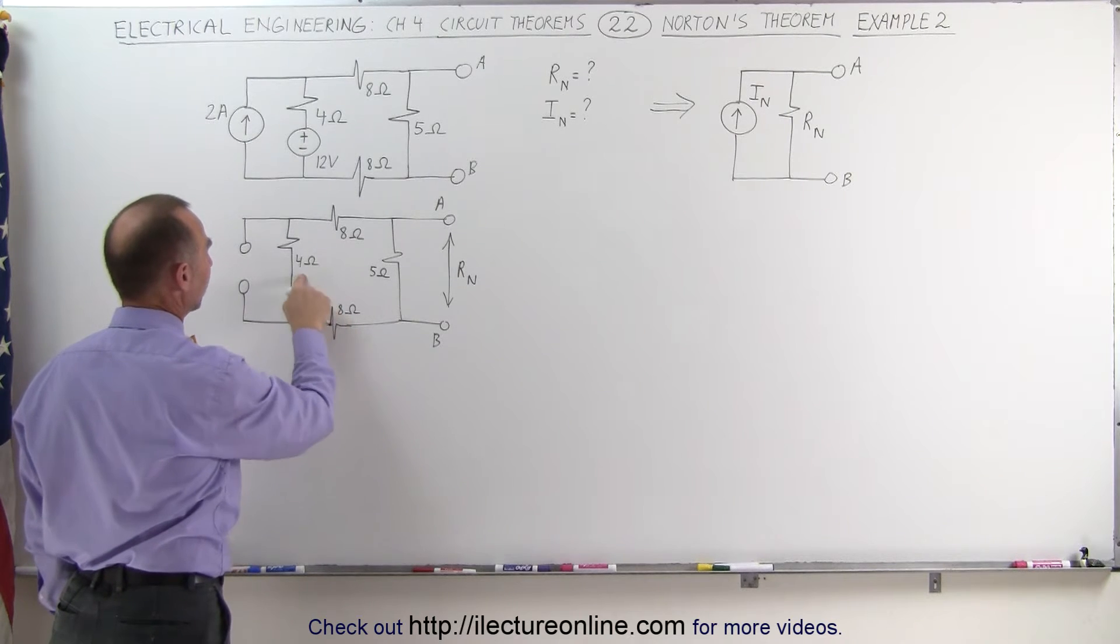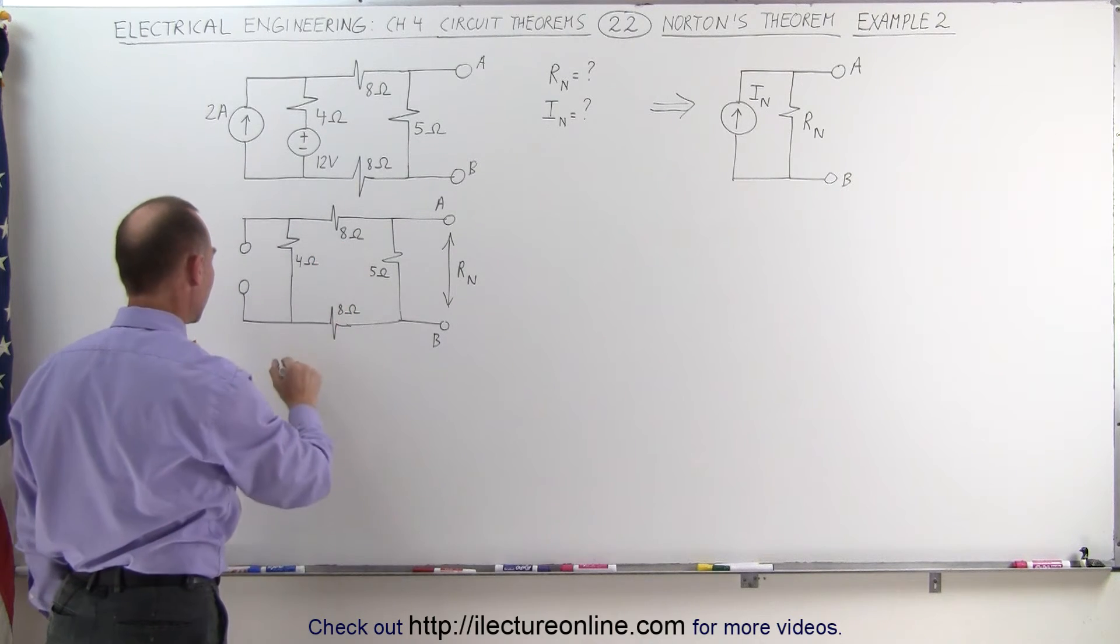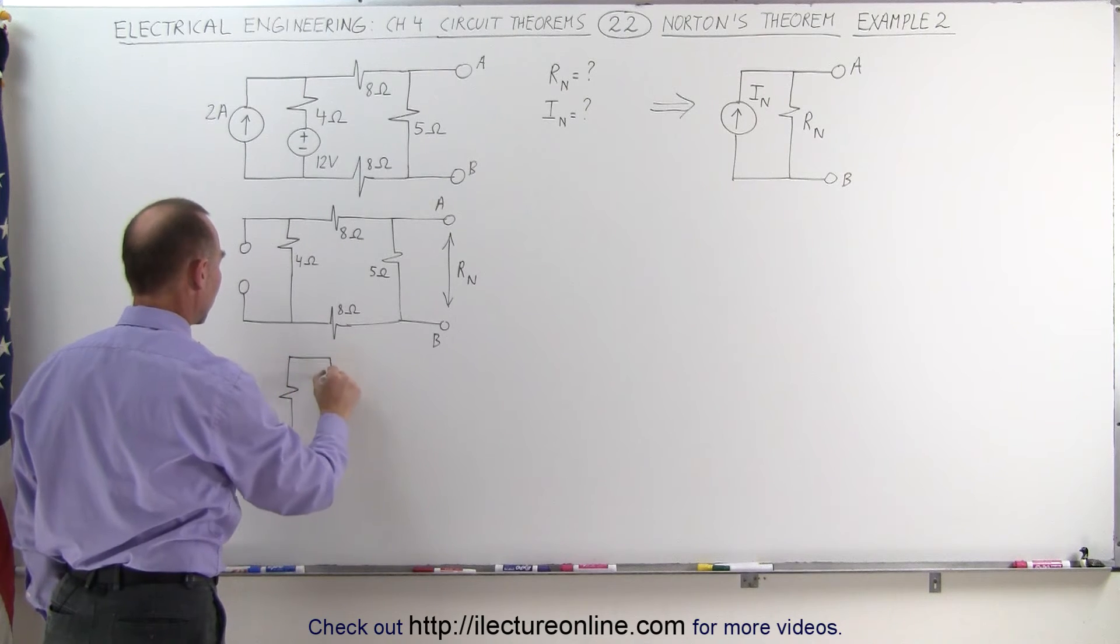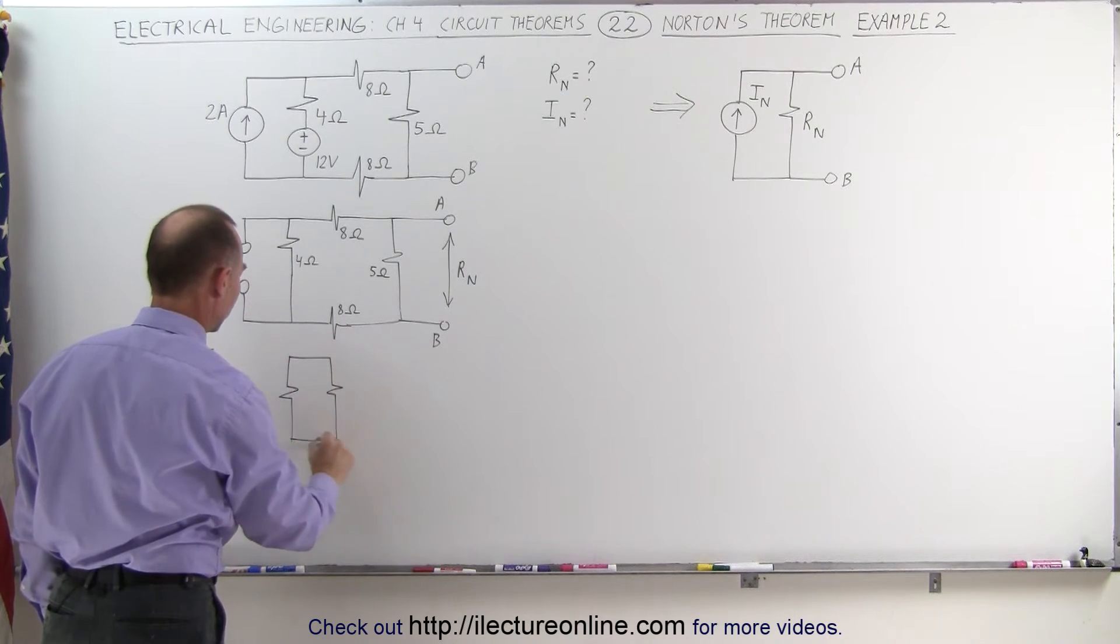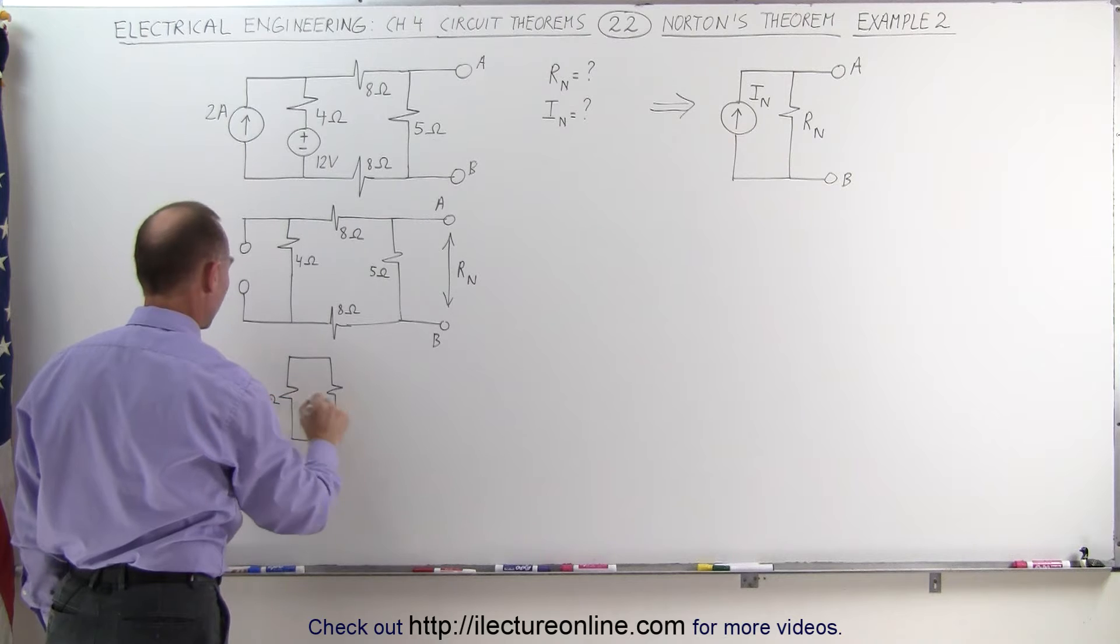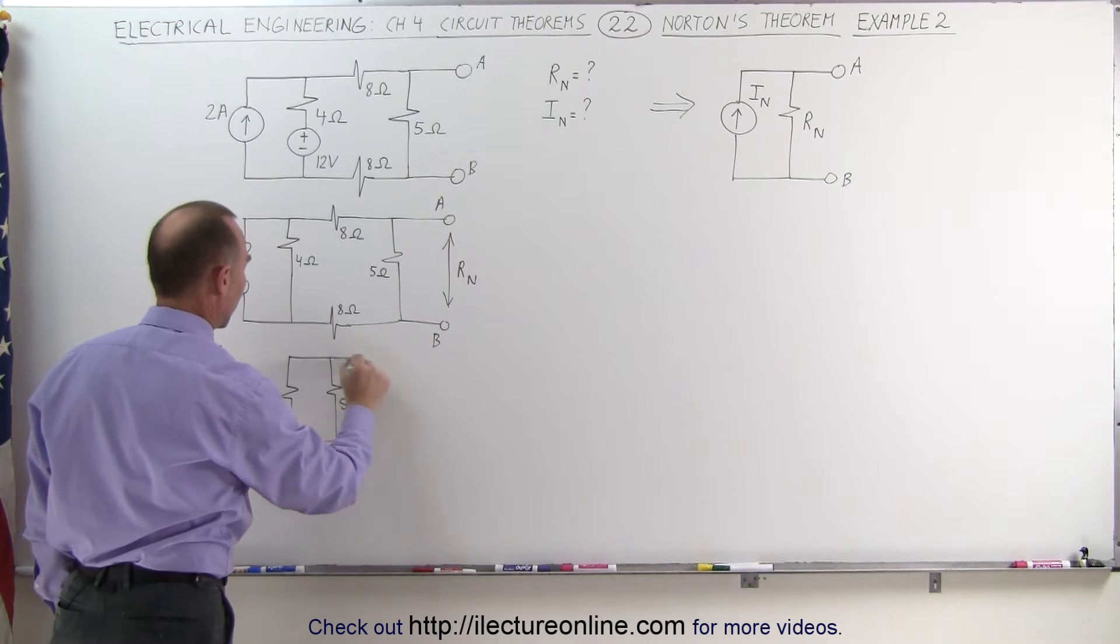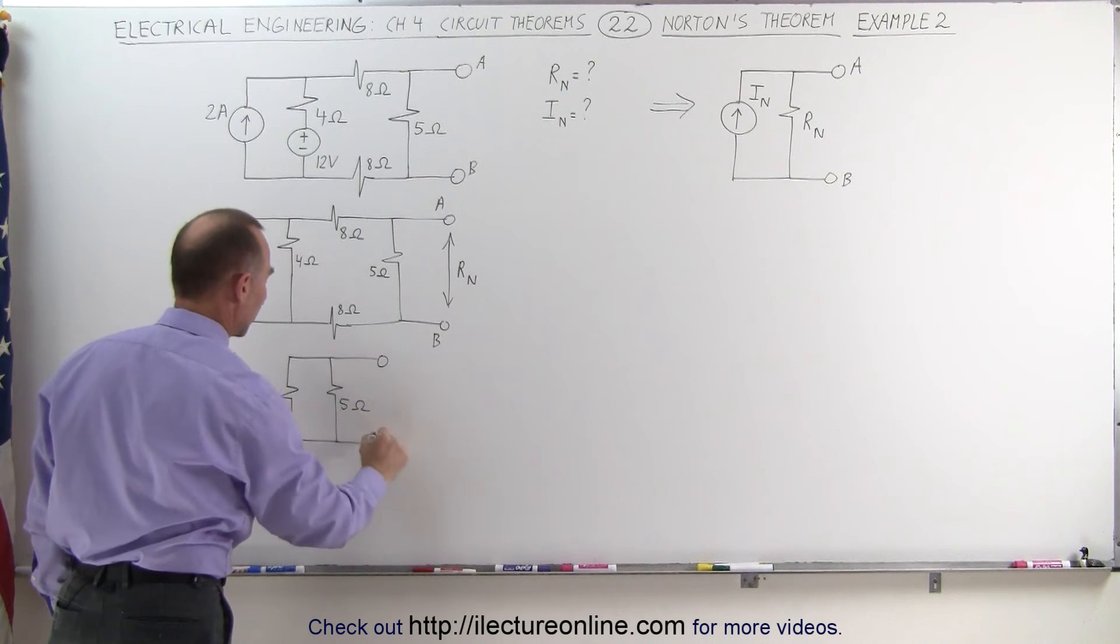So we get 8 plus 4 is 12 plus 8 is 20. That gives us a 20 ohm resistor in parallel with a 5 ohm resistor. 20 ohms, 5 ohms and connected to terminals A and B.